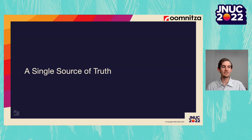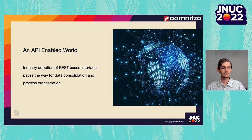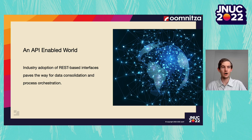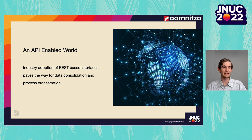Let's dive deeper into what it takes to achieve a single source of truth. Industry adoption of REST-based interfaces paves the way for data consolidation and process orchestration. Over the last 10 years, software vendors have increasingly offered more programmatic ways to extract data and interact with systems through REST APIs. In the past, we were forced to export data to a spreadsheet. Working across multiple spreadsheets is time-consuming, error-prone, and certainly not scalable as the number of devices coming online continues to skyrocket. REST APIs are now table stakes for any modern SaaS application and enable us to extract data and achieve a unified single source of truth. Not only do these interfaces allow us to synchronize data bidirectionally, but we can also take that information and turn it into action across any one of your connected systems.